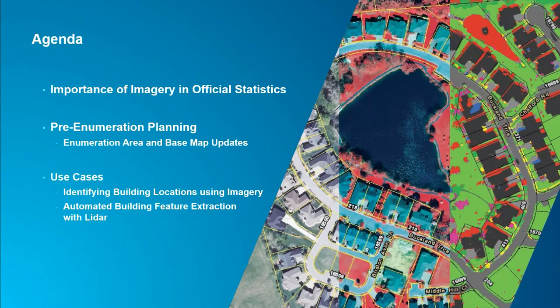Today, we're going to talk about the importance of imagery in official statistics. I'm going to use the term imagery broadly to include not only imagery, but many types of remotely sensed data, including LIDAR. Imagery can be used throughout most of the census processes, but we're going to focus on the planning and pre-enumeration phase. We'll explore the uses of imagery for creating and validating enumeration areas and base map updates, and look at two use cases with demos: one on identifying building locations using imagery, and the other on automated building feature extraction using LIDAR.